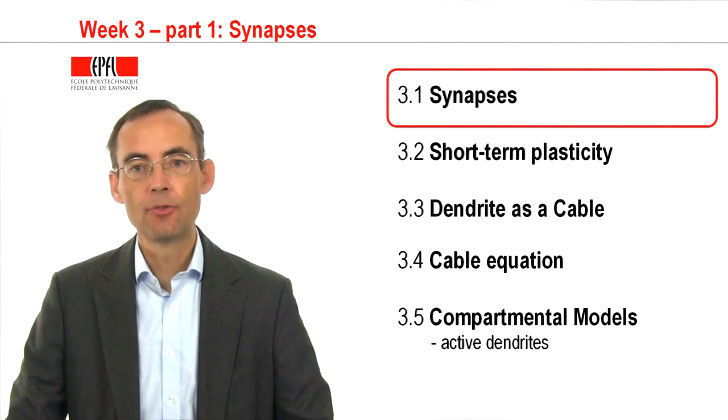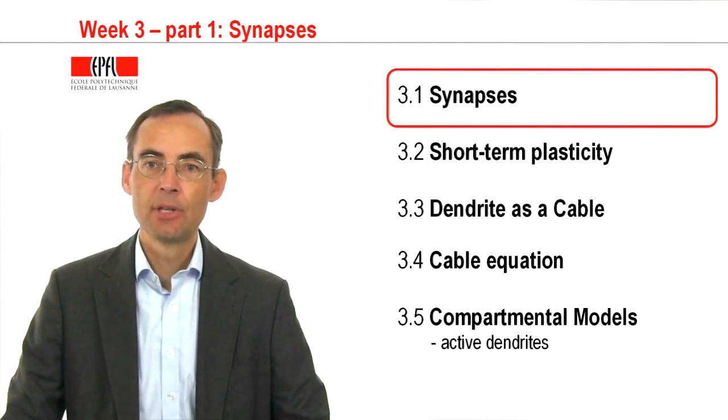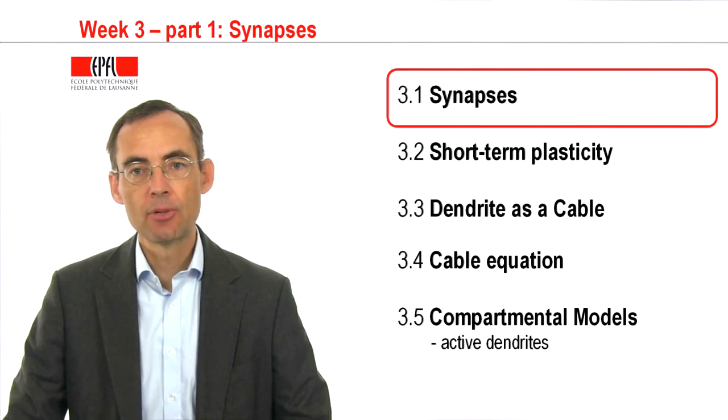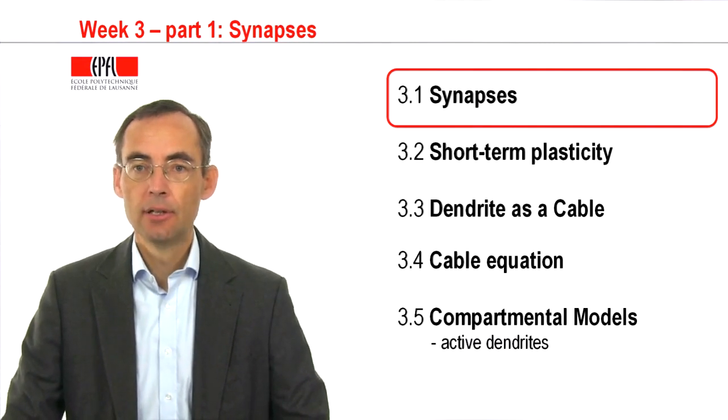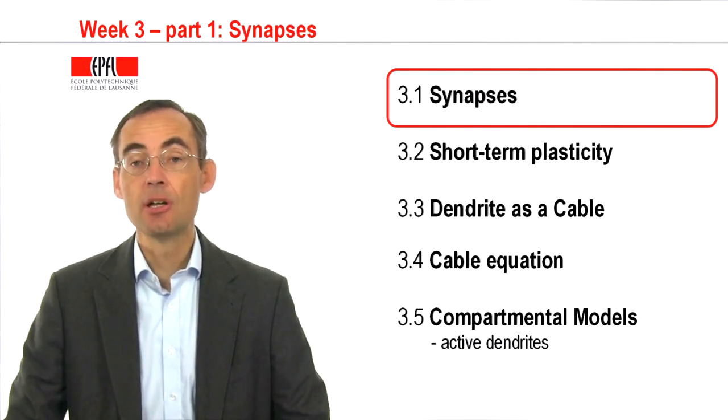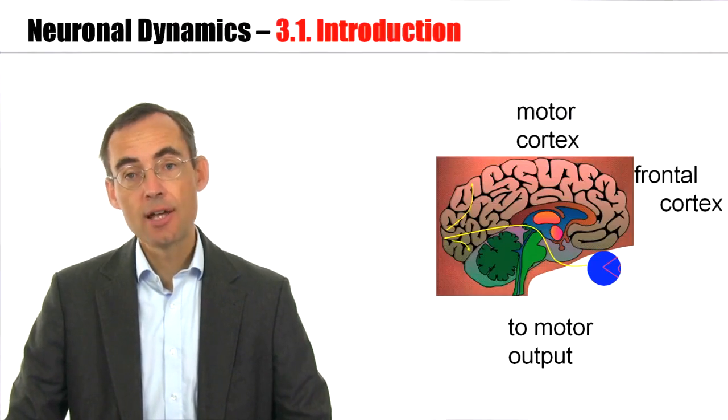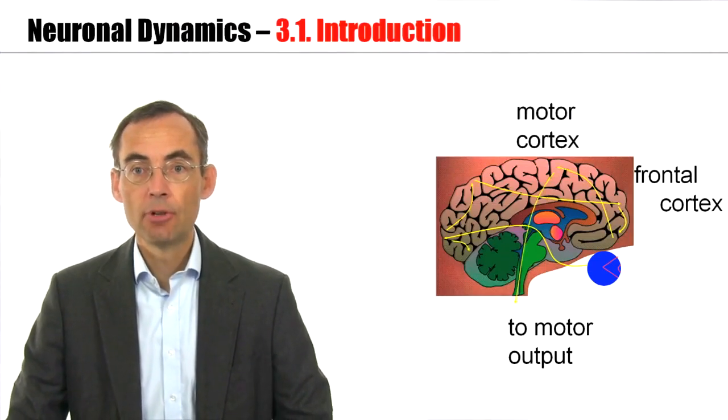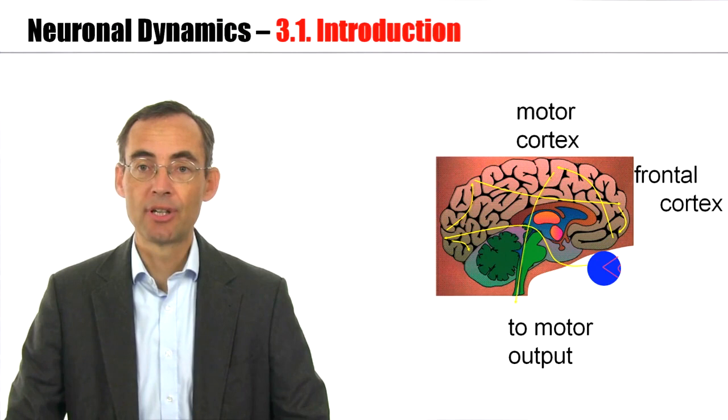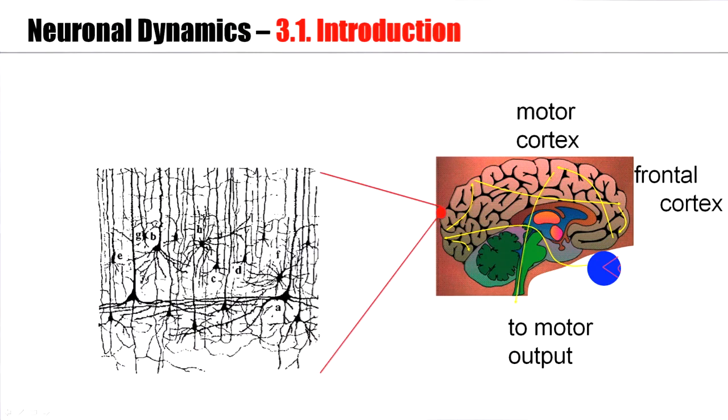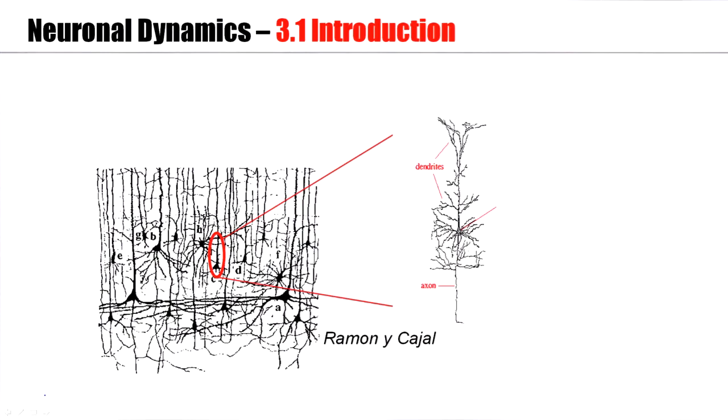Welcome to week 3 of the class Neural Dynamics. Last week we talked about the model of Hodgkin-Huxley. This week we will add more detail. Just as in the previous weeks, we will focus on a single neuron, an isolated neuron that may be part of the network of neurons in cortex. Last week we talked about a biophysical model of the type of Hodgkin-Huxley.